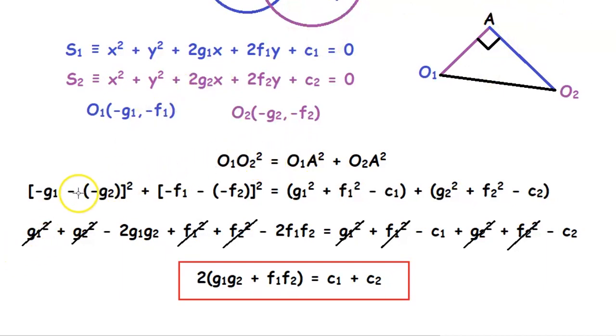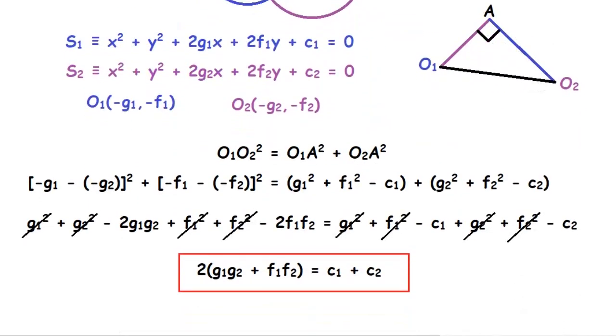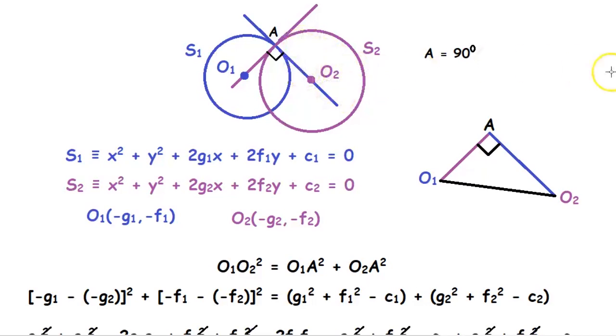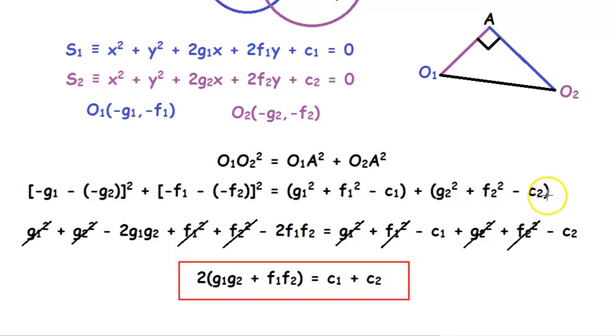So O₁O₂² equals (-g₁ - (-g₂))² + (-f₁ - (-f₂))² equals O₁A². So here O₁A is the radius of this circle. So that is √(g₁² + f₁² - c₁), and O₂A is the radius of this second circle. So that will be √(g₂² + f₂² - c₂).